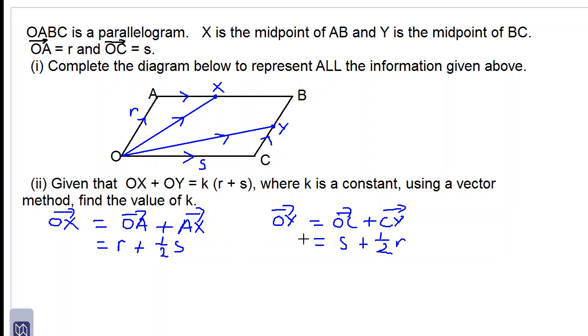So now we have expressions for OX and OY. So let's find OX plus OY now. OX is equal to r plus one half s, and OY is equal to s plus one half of r.